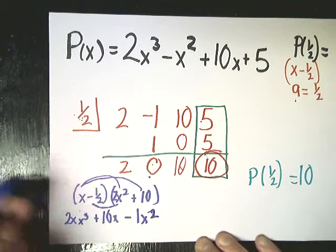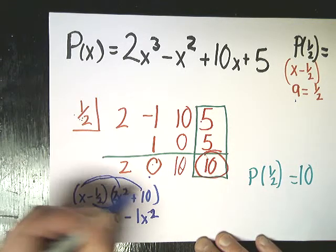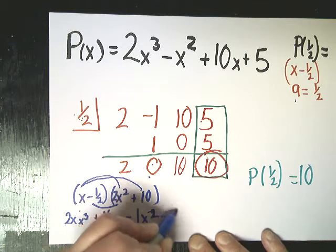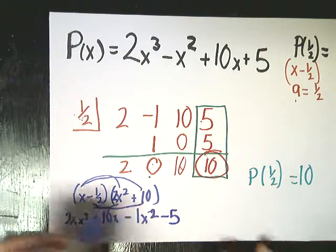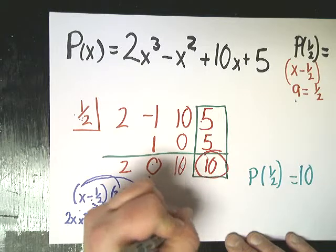which gives you negative one x squared, minus five. Negative one half times ten is negative five. Now I'll tag this plus ten on the back. I'll get all my like terms together.